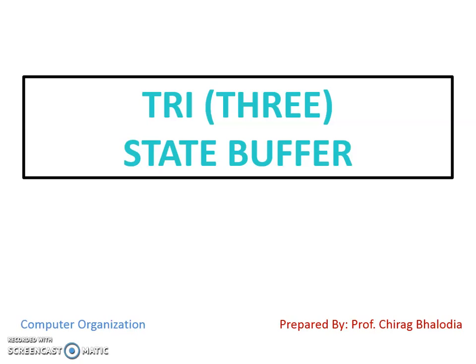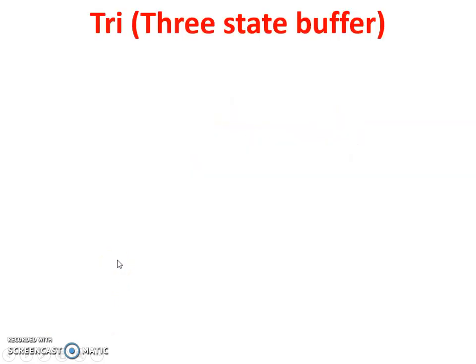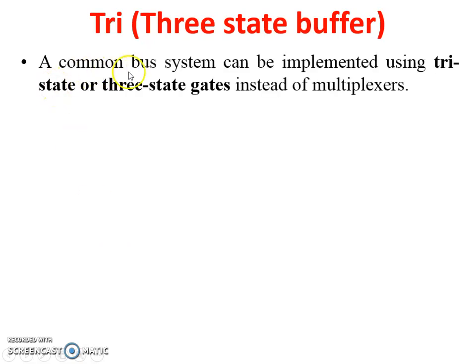Hello friends, myself Chirag. Today I am going to discuss with you tri-state buffer, or we can say three-state buffer, a topic of computer organization and architecture. First of all, a common bus system can be implemented using tri-state or three-state gates instead of multiplexers. The other method of data transfer from register to bus or bus to register is multiplexers, and this is the tri-state buffer method. Today we will discuss about the tri-state buffer method.